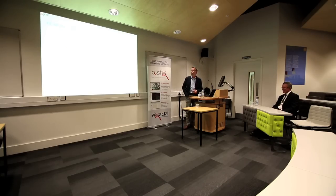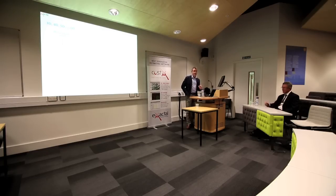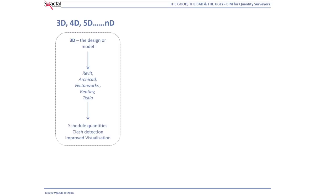You've all heard the terms 3D, 4D, 5D, 6D and on. 3D is the design or model itself, created in numerous applications: Autodesk Revit, Graphisoft ArchiCAD, Vectorworks, Bentley, Tekla, and many more. In the MEP space there's AutoCAD MEP, AutoCAD Plant, Smart Plant. As a QS or estimator, if you have these applications you can do quantity scheduling, clash detection, and improved visualisation. As QSs and estimators, we'll be faced with numerous different file formats.